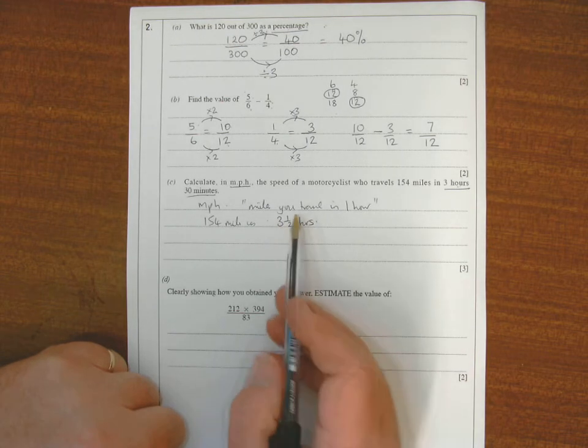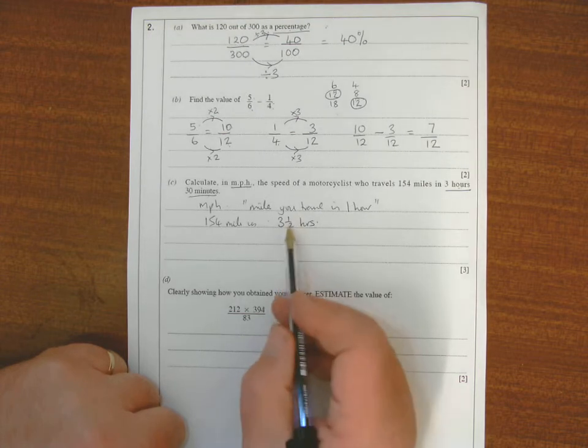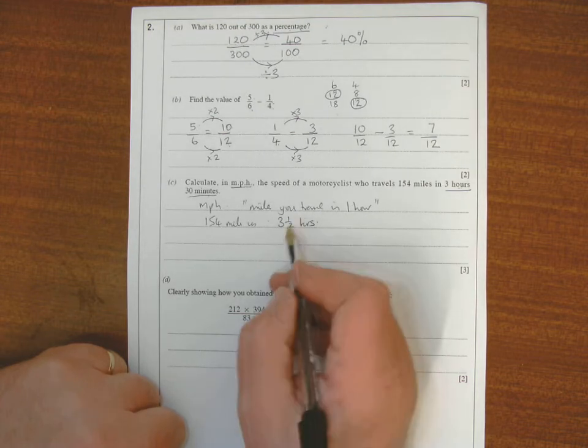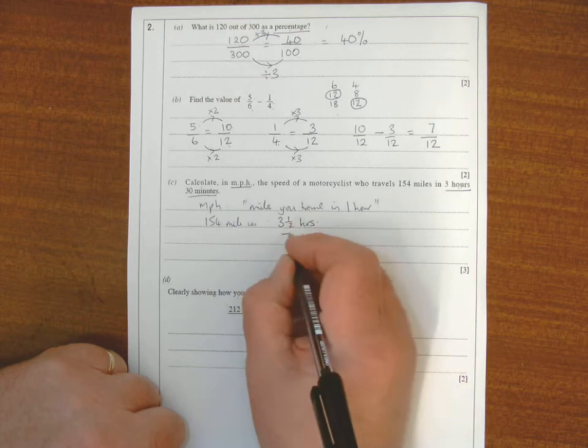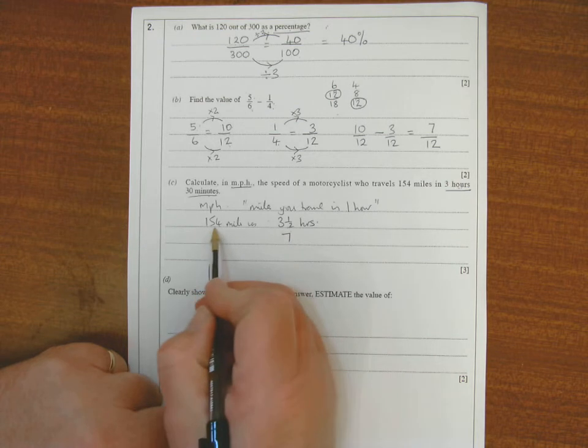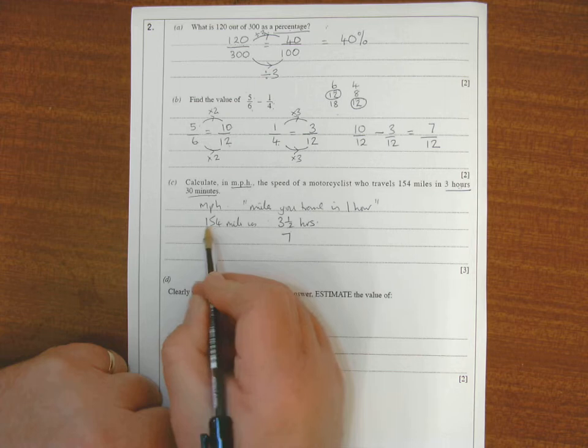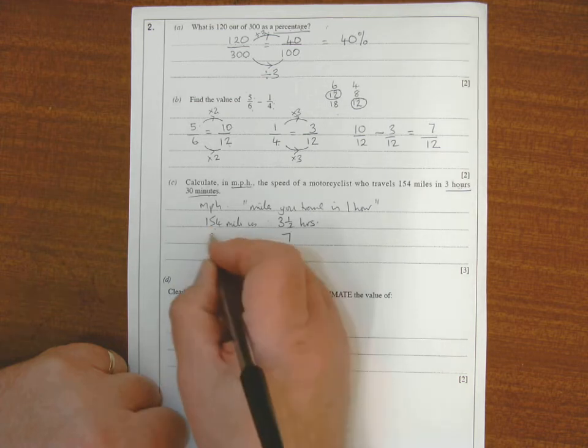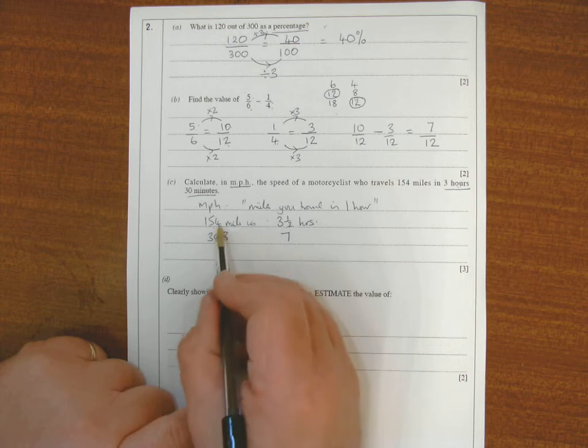Now I've got to scale this back to one. Because it involves a fraction and that's quite difficult, I'm going to get rid of the fraction. To get rid of the fraction if I double, so if I double the 3 and a half that becomes 7, and because I've doubled the 3 and a half I need to double the 154. 150 doubled is 300, so 154 doubled is 308.